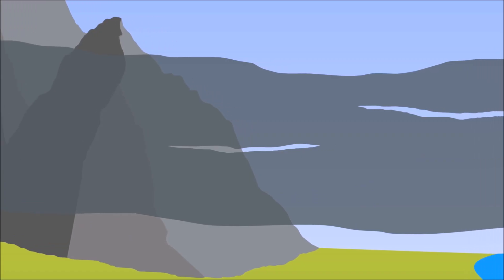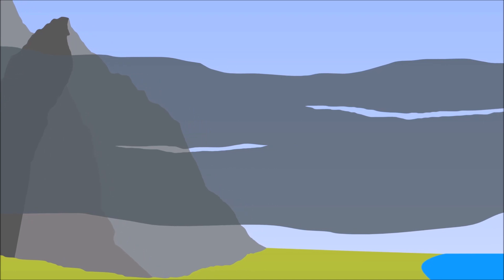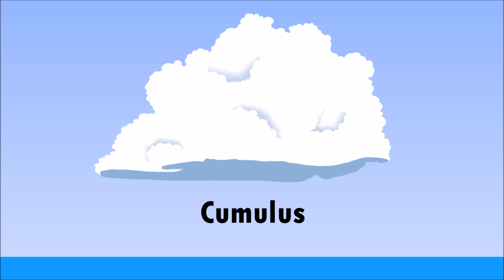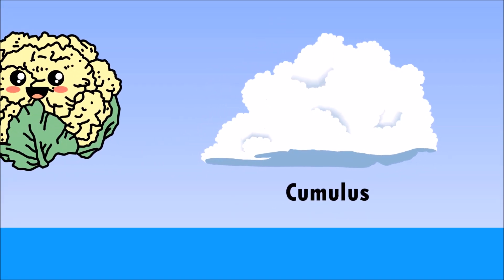Stratocumulus clouds are flat, thick, and dark, but also puffy. They often have flat bases and rounded tops that look like cauliflower.